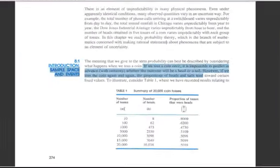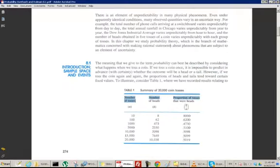To illustrate, consider this table. The first column is the number of tosses, the second column is the number of heads, and the third column is the proportion of heads. So we use n for the number of tosses, H for the number of heads, and H over n for the proportion. Here we toss the coin ten times, we got eight heads, so the proportion is 0.8. Then if we toss the coin a hundred times, maybe we got 62, so the proportion is that.